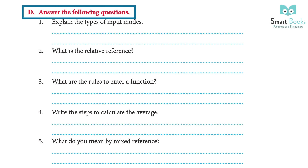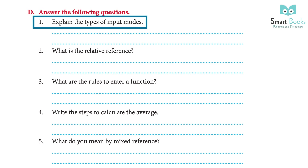Answer the following questions: 1 — Explain the types of input modes. Answer: Enter mode appears when you type the equal sign to begin the formula — used to enter text. Point mode is entered when we press any navigation key on the keyboard — used to select a cell or range as a formula operand. Edit mode is entered when we press the F2 key — used to make changes to the formula.